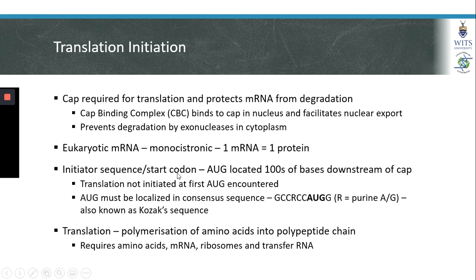Eukaryotic mRNAs contain a start codon. The start codon AUG is also called the initiator sequence, and it is located hundreds of bases downstream of the 5' cap. However, translation is not initiated when the translation machinery encounters the first AUG — in eukaryotic mRNAs, the start codon must be localized in a consensus sequence. This sequence, represented by guanine, cytosine, cytosine, and then a purine (either adenine or guanine), CC, houses the AUG. This is known as the Kozak sequence, named after the scientist who discovered this consensus sequence in eukaryotic mRNAs.